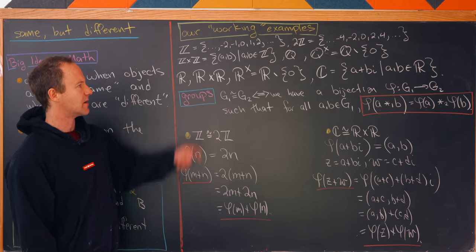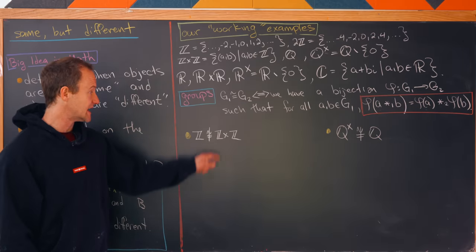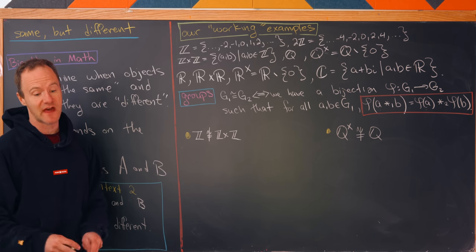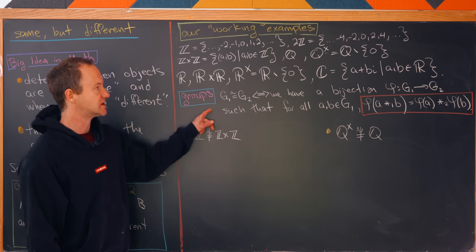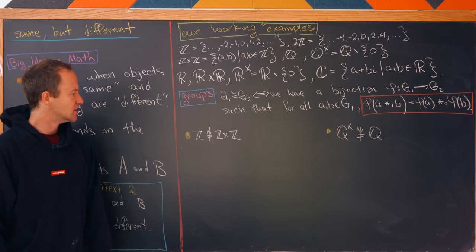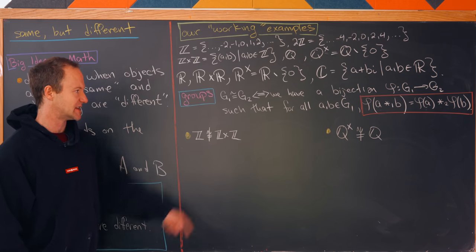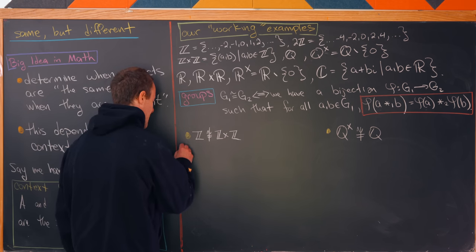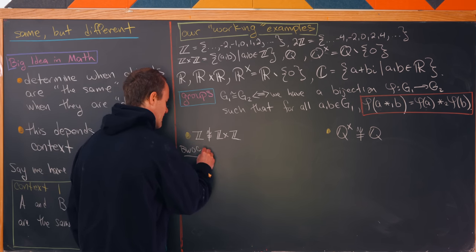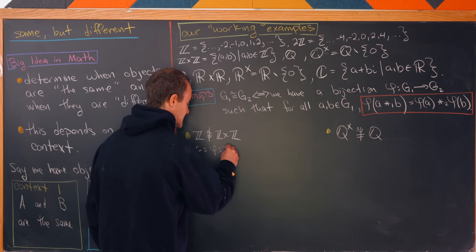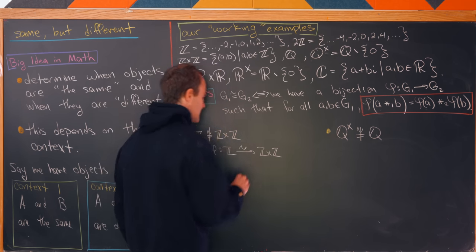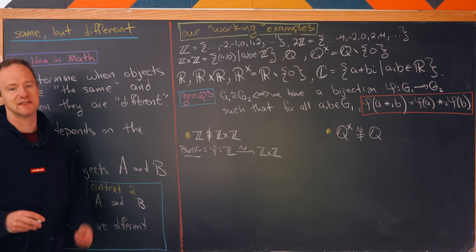Now let's pick things from this list that are not isomorphic as groups. Recall that as sets, Z and Z×Z were the same — same number of elements — but we're about to show that as groups they are not the same, meaning there's no such bijection respecting the operation. We proceed by contradiction: suppose we have an isomorphism φ: Z → Z×Z.